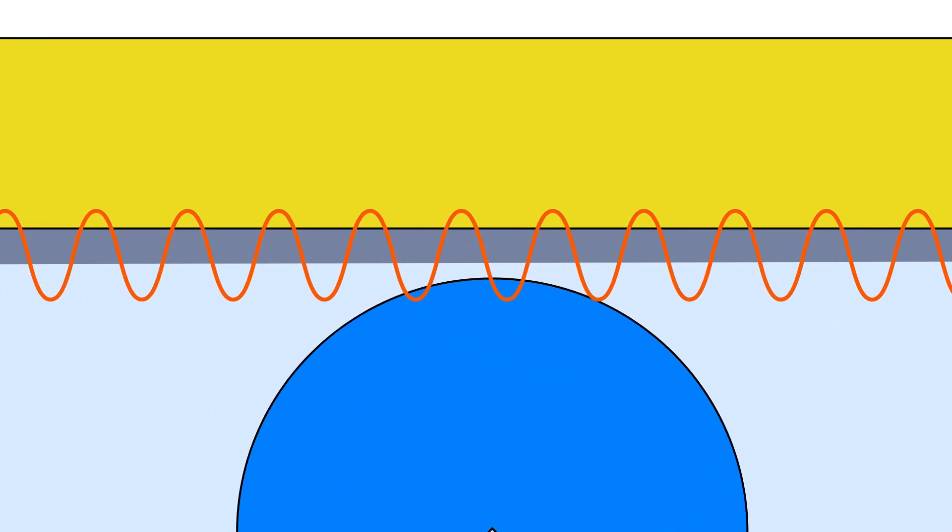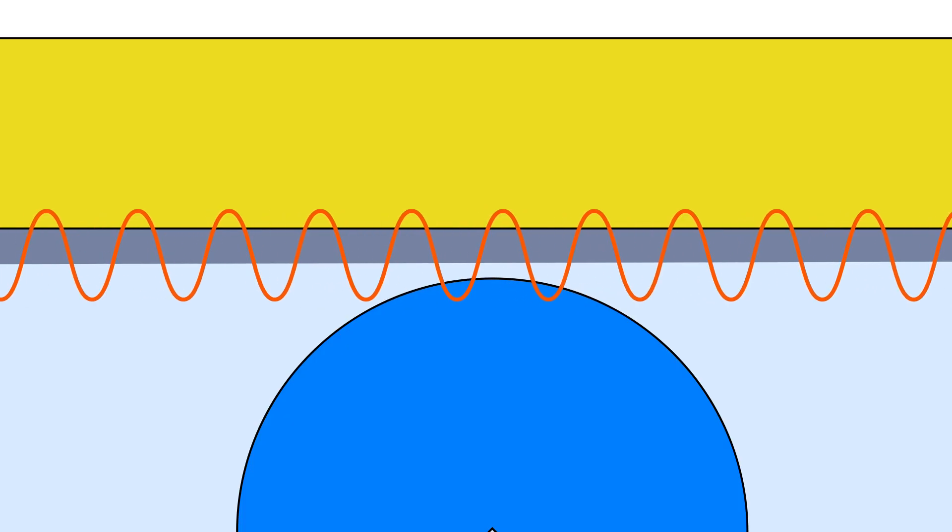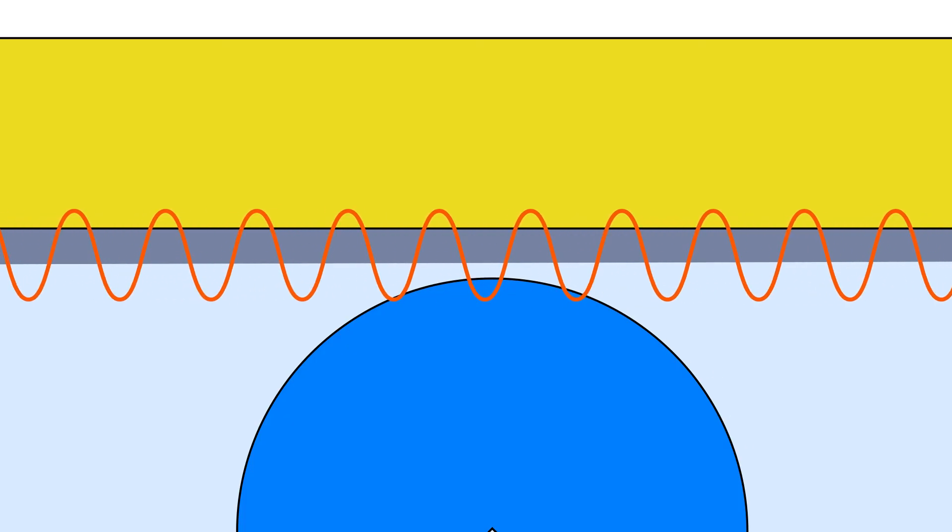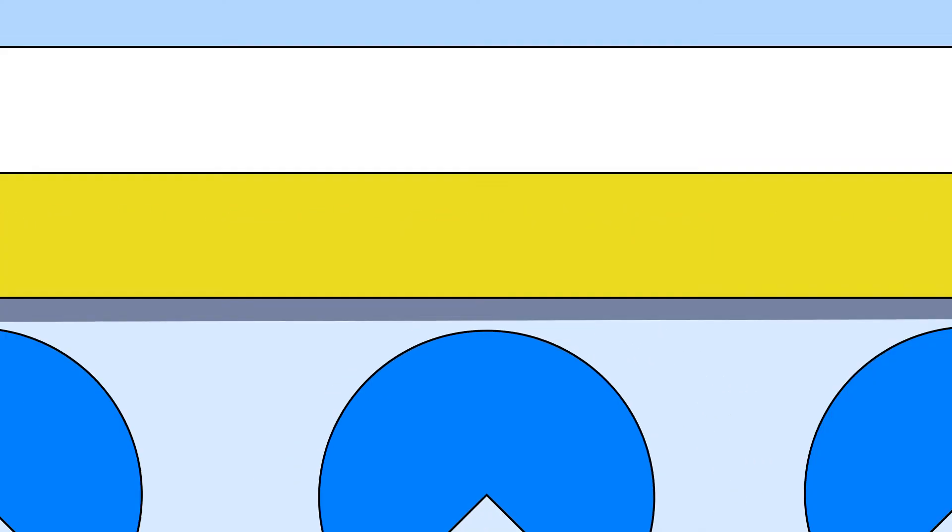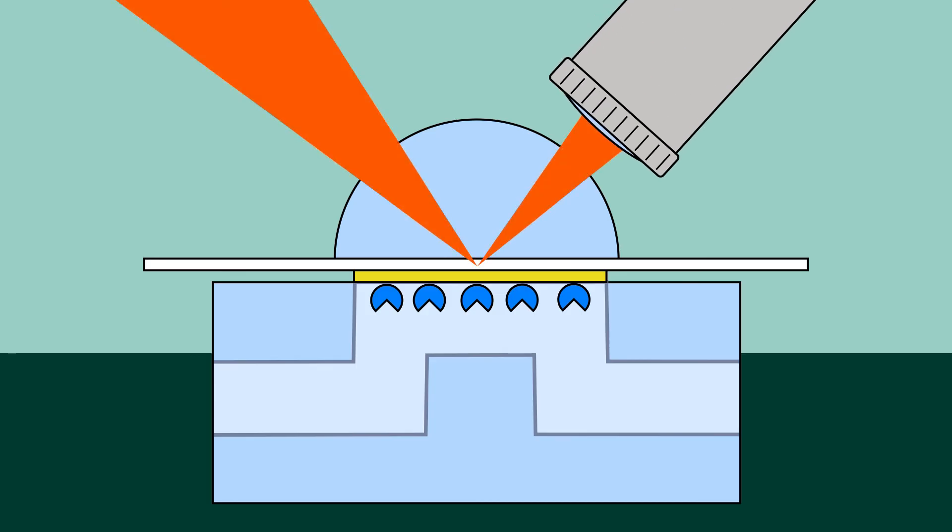Biacore systems use the phenomenon of surface plasmon resonance to detect biomolecular interactions as they happen. SPR causes a reduction of the light intensity reflected at a specific angle from the glass side of the sensor surface. As molecules bind to the sensor surface, the refractive index close to the surface changes, altering the angle of minimum reflected intensity. The change in SPR angle is proportional to the mass of material bound.